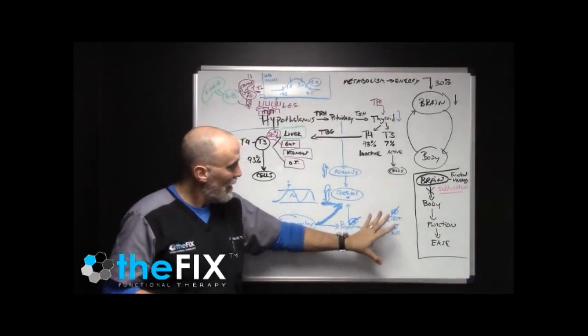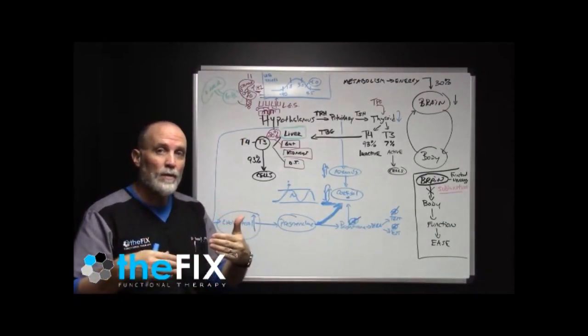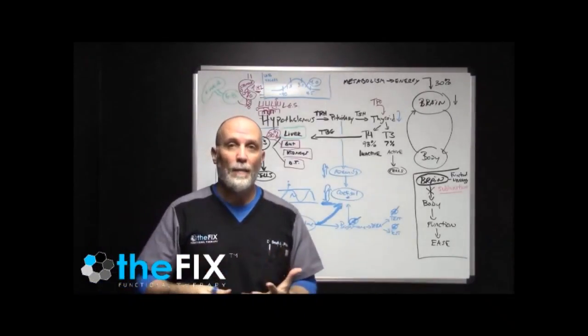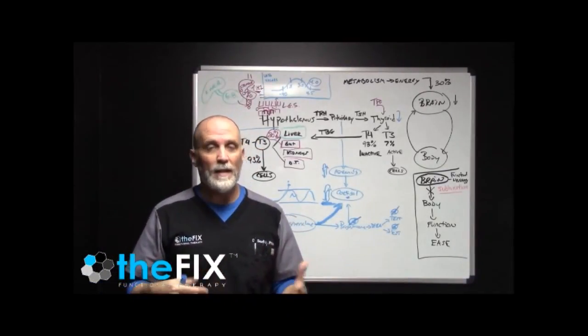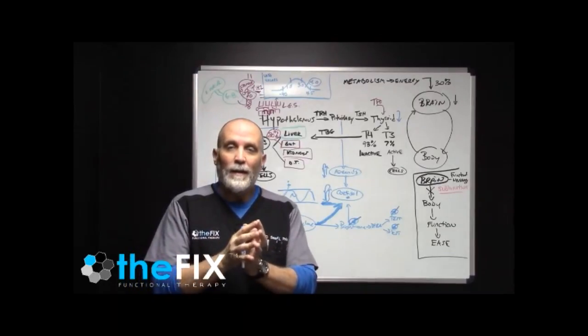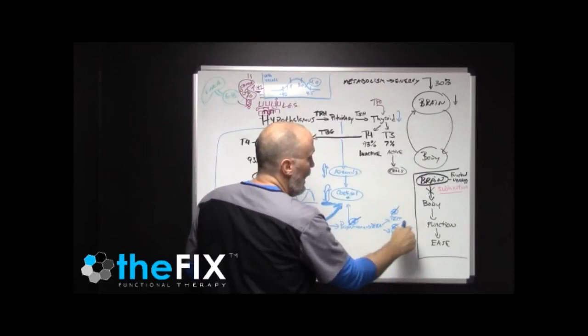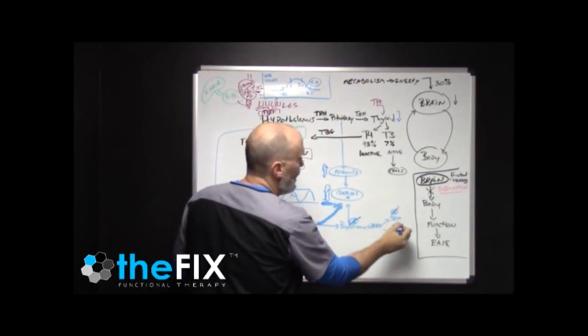So what can happen is if you're getting these exogenous sources of estrogen outside of not getting the right level of progesterone to oppose it, then your body becomes estrogen dominant. And as you probably know, estrogen dominance can lead to all kinds of different issues, breast cancer, so on and so forth. But outside of that, being estrogen dominant, if estrogen is dominant, it loves to bind to thyroid binding globulin.